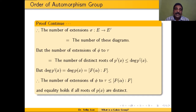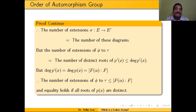Note that the degree of P'(x) equals the degree of P(x), which equals the degree of extension [F(α):F], since P(x) is the irreducible polynomial — equivalently the minimal polynomial — of α over F. Therefore, the number of extensions from φ to τ is less than or equal to [F(α):F], with equality if all roots of P(x) are distinct, i.e., P(x) is separable.